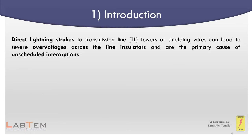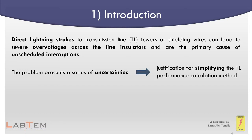Direct lightning strokes to transmission lines can lead to severe overvoltages across the line insulators, causing unscheduled interruptions. Several methods for estimating lightning outage rates have been developed and are documented in brochures and standards. They all agree that the problem presents a series of uncertainties, which are often used as a justification for simplifying the transmission line performance calculation method.